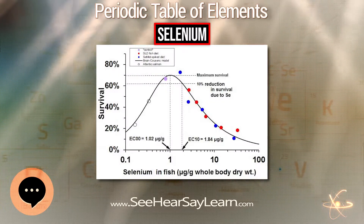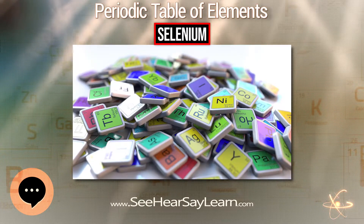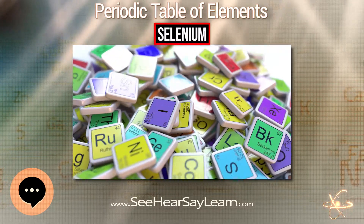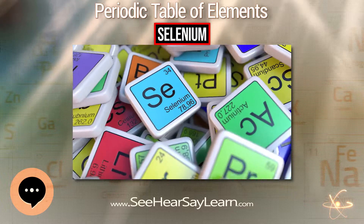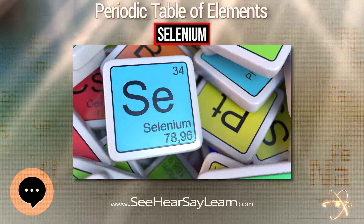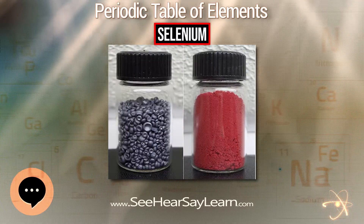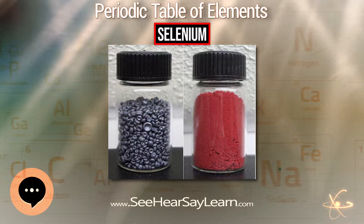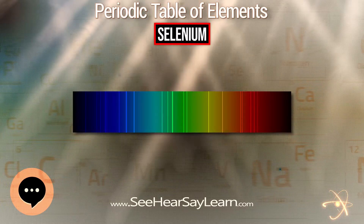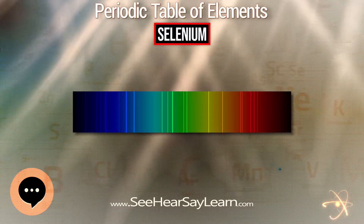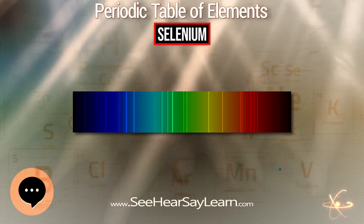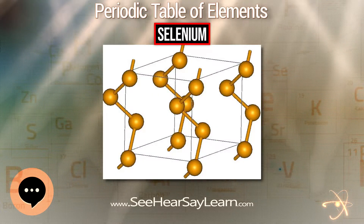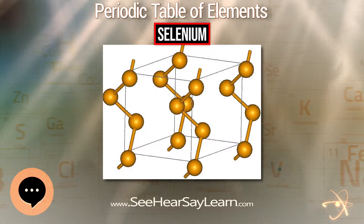Selenium is found in metal sulfide ores, where it partially replaces the sulfur. Commercially, selenium is produced as a byproduct in the refining of these ores, most often during production. Minerals that are pure selenide or selenate compounds are known but rare.